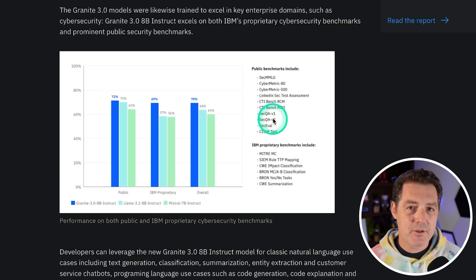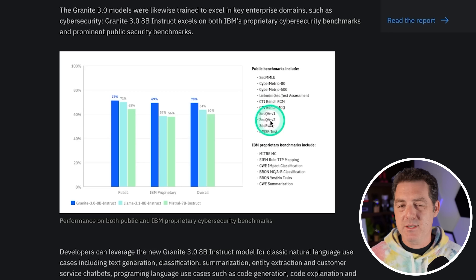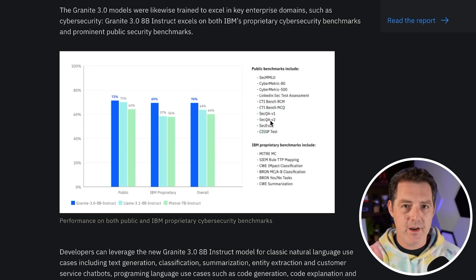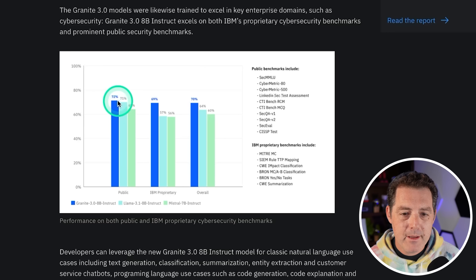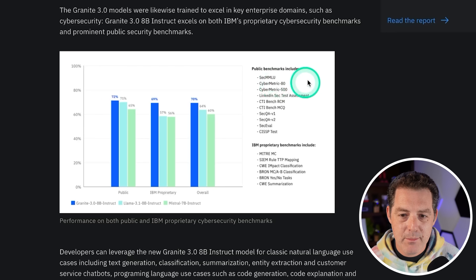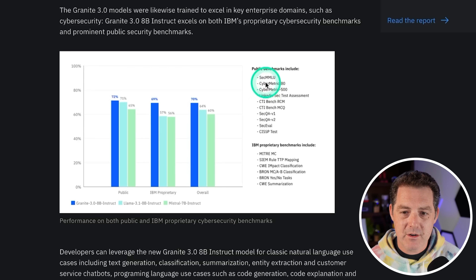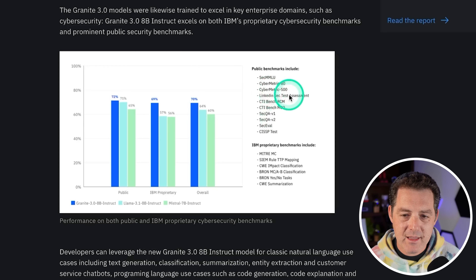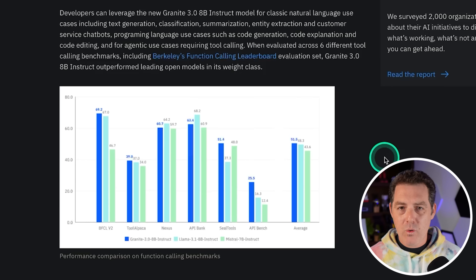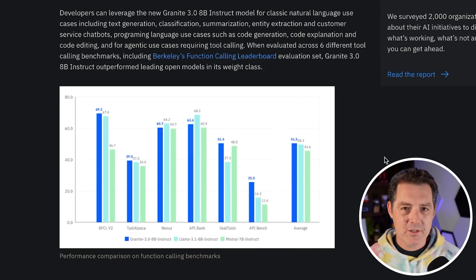Here we have cybersecurity benchmarks, which are especially important if you're an enterprise wanting to use Granite models for your business. For the public benchmarks, Granite again wins. Some of the benchmarks being tested include SecMMML, Cybermetric 80, Cybermetric 500, LinkedIn SecTrust Assessment, and more. And of course, if you're in an enterprise environment, tool calling is also important.